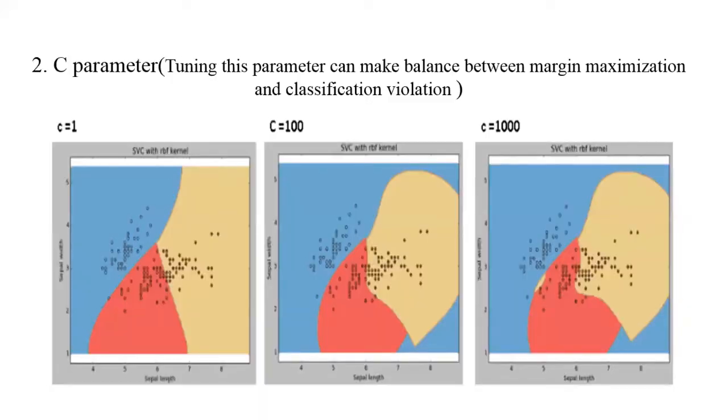The second parameter is C parameter. Tuning this parameter can make balance between margin maximization and classification violation. This figure shows different values of C and its effect on classification. For very small value of C, the optimizer will look for a larger margin separating hyperplane even if that hyperplane misclassifies more points. For large values of C, overfitting takes place. So the optimizer chooses the perfect value of C which avoids overfitting and classifies the points accurately.